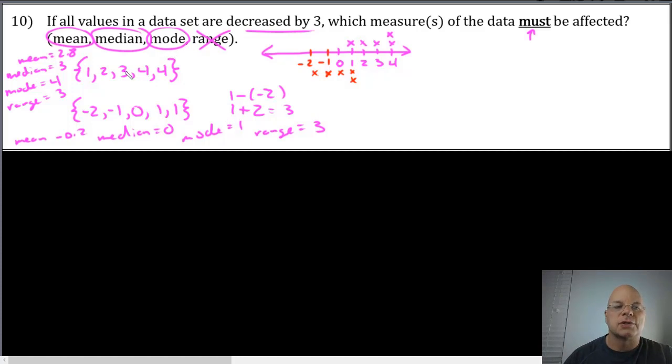You might think that's the final answer, but that's what's tricky about this one. We created a data set that had a mode. If we instead use a data set with no mode, the range won't be affected. The mean will certainly be lower, as will the median, because the median is a measure of central tendency. If everything shifts down 3, the median will decrease by 3.